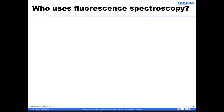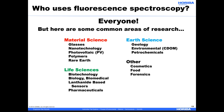So, who uses fluorescence spectroscopy? That's an easy answer — pretty much everyone. But just to be specific, here are some common areas of research for which fluorescence spectroscopy is especially helpful. This includes material science, life science, earth and environmental sciences, and others such as cosmetics, food, and forensics applications.